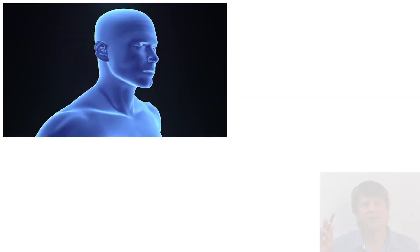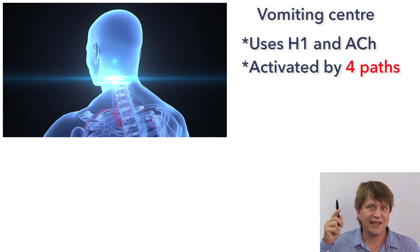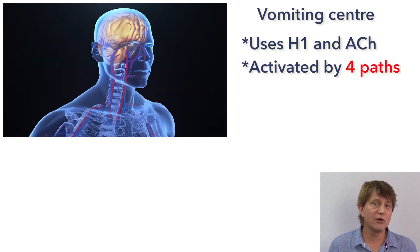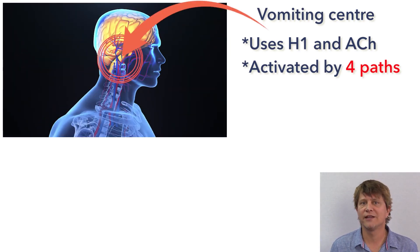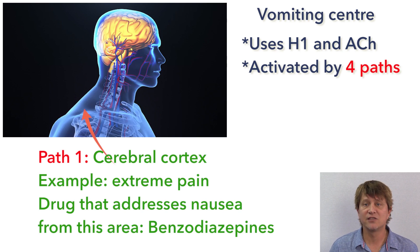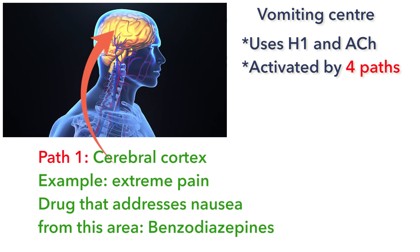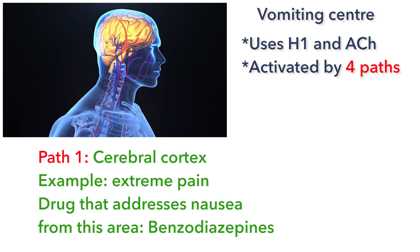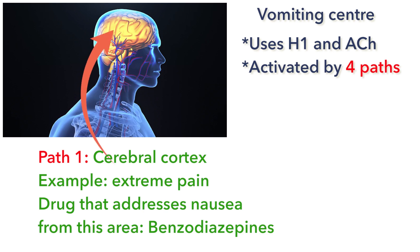The vomiting center in the medulla can be activated directly by irritants or indirectly following input from four major areas. The first area is the cerebral cortex. Examples of stimuli that would prompt the cerebral cortex and send messages to the vomiting center would be extreme pain or anxiety. Examples of drugs that would decrease inputs from the cerebral cortex include the benzodiazepines.